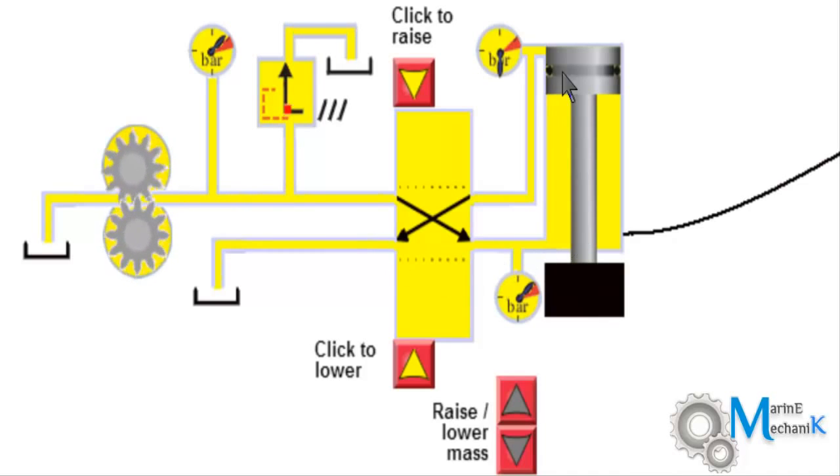Again after lifting up to the top most position, the pressure reaches maximum which is same as the line pressure. And then the safety valve lifts and relieves the excess oil.